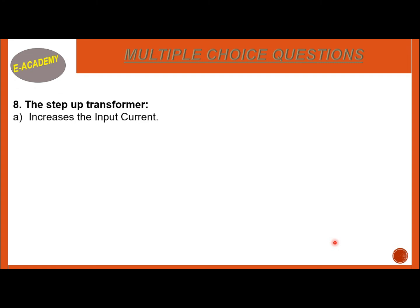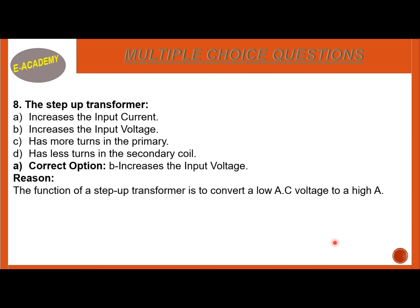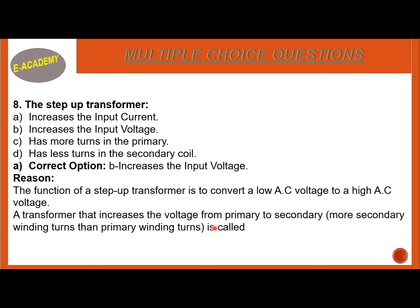Question 8: A step-up transformer — A. increases the input current, B. increases the input voltage, C. has more turns in the primary, D. has less turns in the secondary coil. The correct option is B — increases the input voltage. The function of a step-up transformer is to convert a low AC voltage to a high AC voltage. A step-up transformer has more windings in the secondary coil as compared to the primary winding.